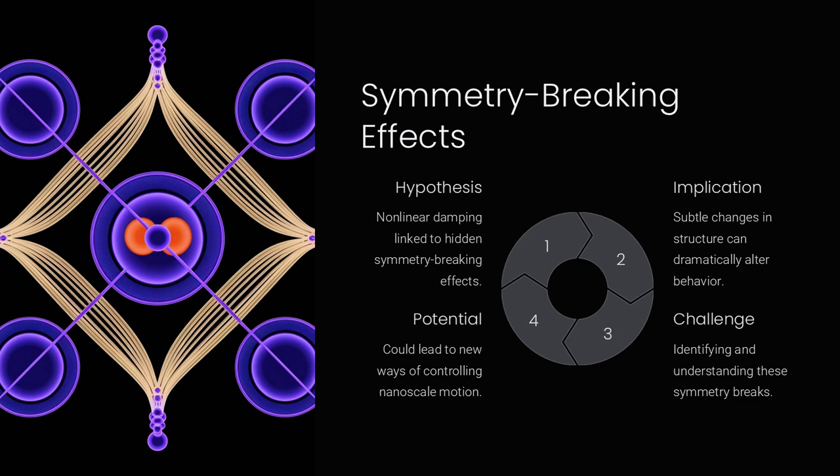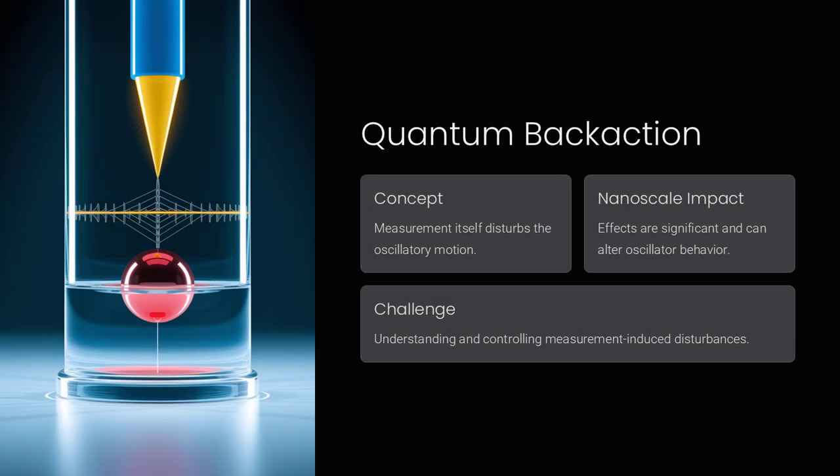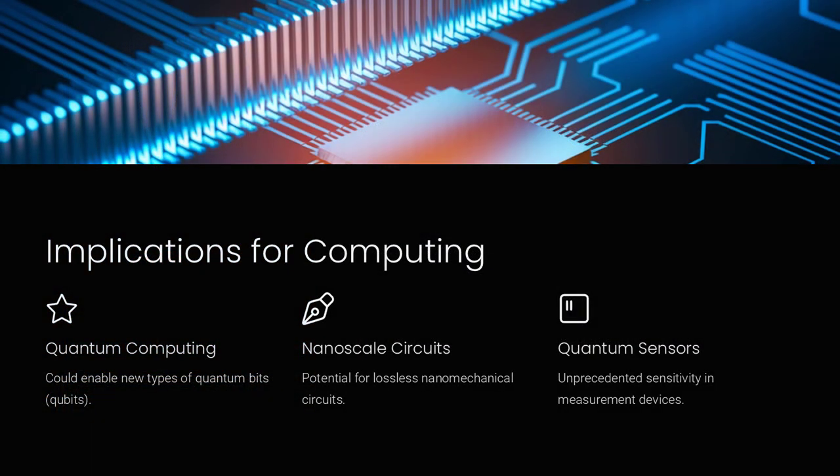In some cases, energy loss is mysteriously suppressed, allowing oscillations to persist far beyond classical predictions. Why does damping behave so differently at the nanoscale?